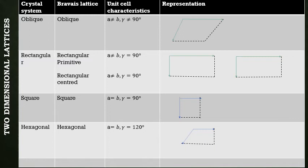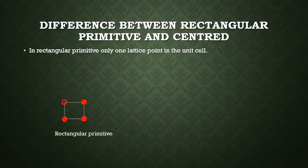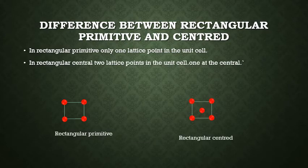The difference between rectangular primitive and rectangular centered is shown in this slide. In rectangular primitive, four atoms are at four corners of the rectangle, each shared by four atoms, that is, only one lattice point in the unit cell as shown in the figure. In rectangular central, two lattice points in the unit cell, one at the central and four atoms are at four corners of the rectangle, each shared by four atoms, so the effective number of atoms in this lattice is two.